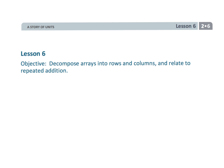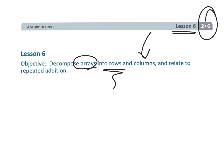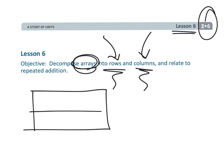That wraps up a tongue-twister of a lesson: second grade, module six, lesson six. The tongue twister is that we're constantly paying attention to rows, columns, and arrays. It is really easy for a student to look at an array and get the columns and rows all mixed up — and that's perfectly fine. We're just letting our students work through that.